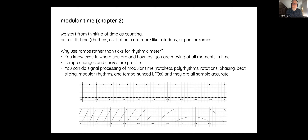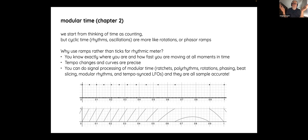We want to encourage you to think about using phasor ramps to represent time. A metro object ticks zero, zero, zero, one — but if you're not getting the one out of it, you don't know where you are. If you use a ramp, you always know exactly where you are. If you look at the difference between the current sample and the last one, you get the slope, so you know how fast you're moving. That means tempo changes and curves are precise, and you can do polyrhythms, ratchets, and sample-accurate modular time processing.